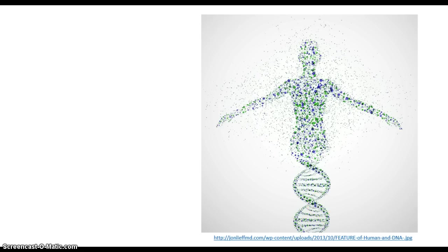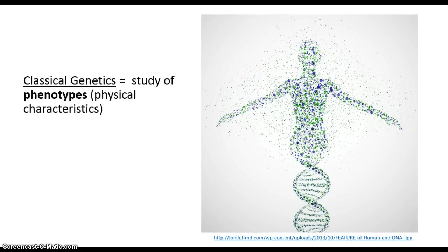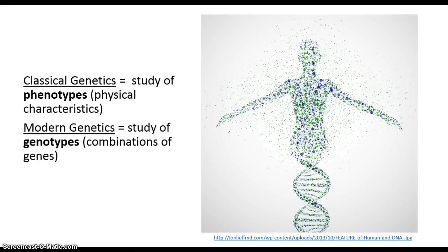Classical genetics is the study of phenotypes, because in olden times, hundreds of years ago, the idea of how DNA worked was not necessarily apparent to everyone. They could instead study the characteristics of organisms. Modern genetics allows us to understand the underlying mechanisms of the DNA itself.